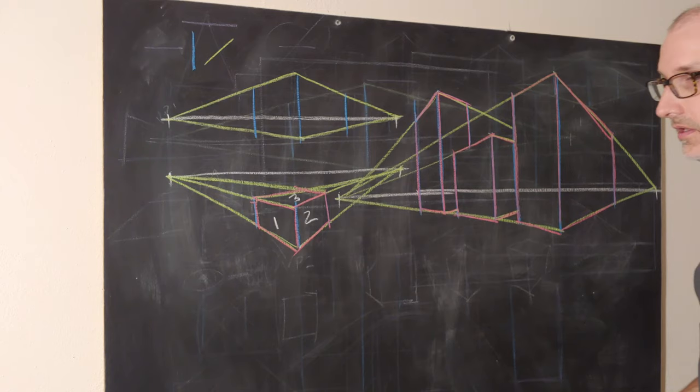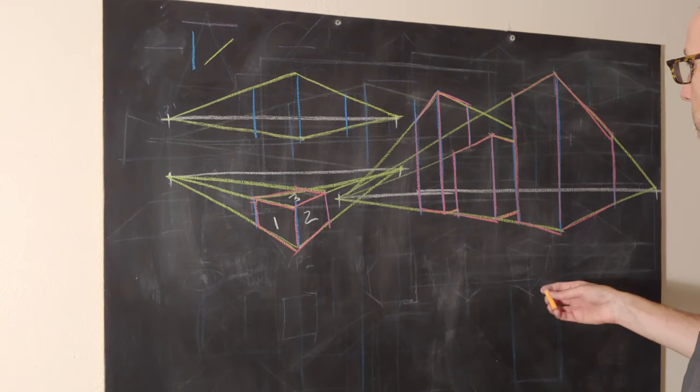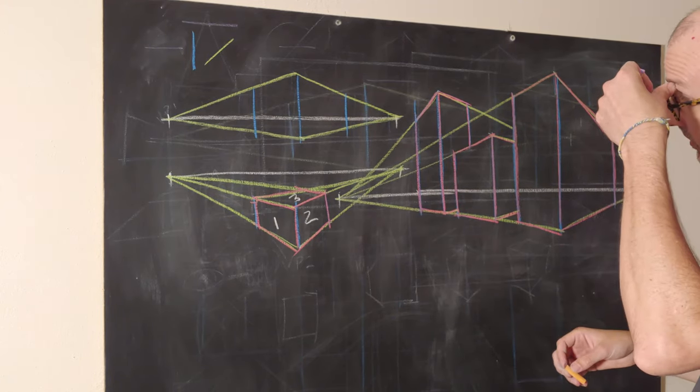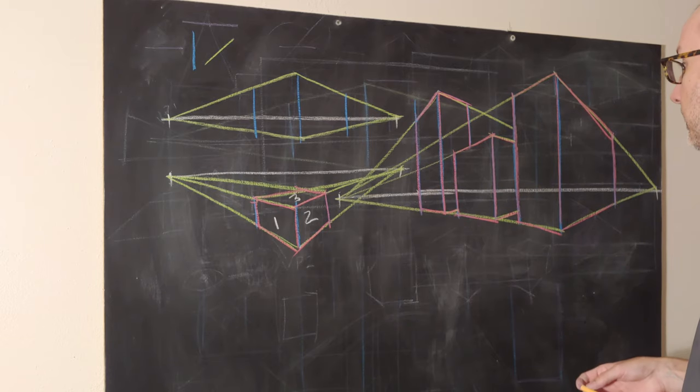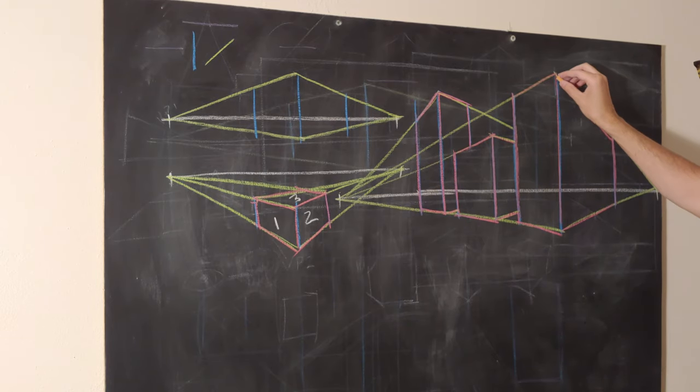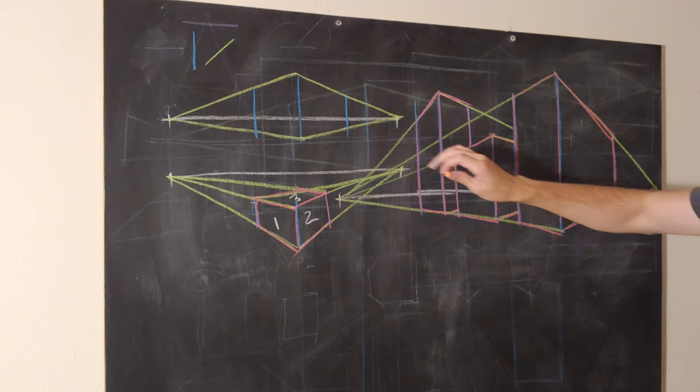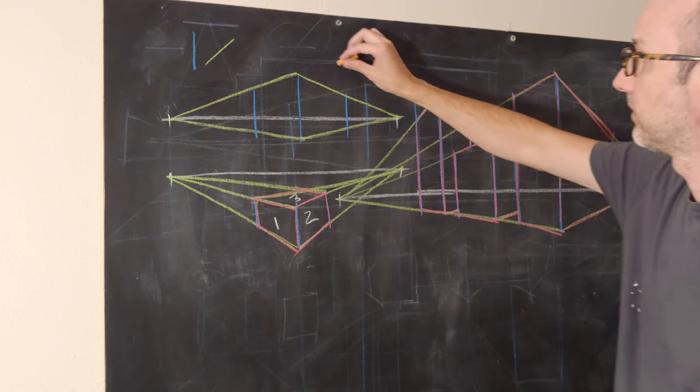Then if we want to go real nuts with it, we can then get into a little bit of value and value in perspective. And of course that has to do with lighting, but it also has to do with just clarity, right? So we can say the light is kind of coming from over here, right?